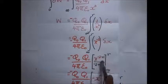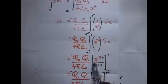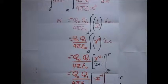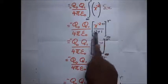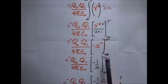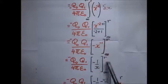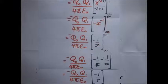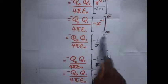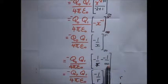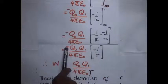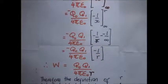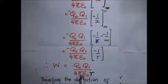Applying the rules of integration, we add one to the power: negative two plus one gives negative one, and we divide by the new power negative one. Evaluating from infinity to r gives negative x to the power negative one, which equals negative 1/x. Substituting the limits: at r we get negative 1/r, and at infinity negative 1/∞ equals zero. The two negatives multiply to give a positive, so work W equals q₀q₁ / (4πε₀r).